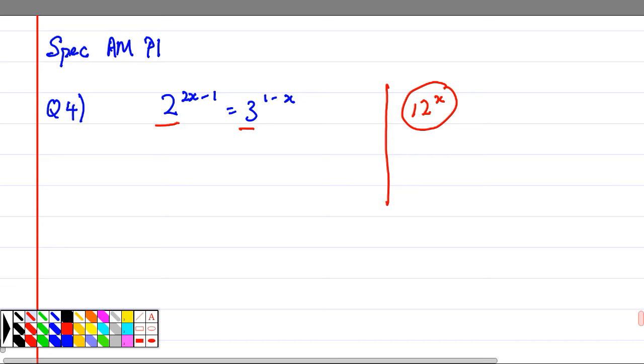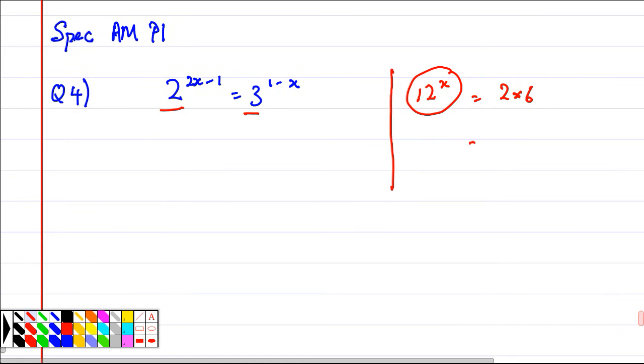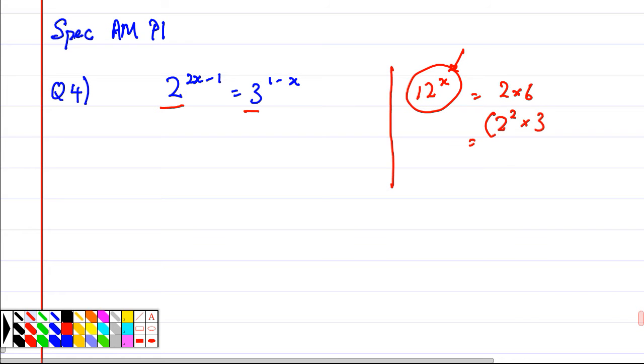Split it into what? 2 and 3, of course. So of course you can say this is 2 times 6, but you can say this is 2 squared times 3. And because there's an x here, there's an x here, that means over here there is an x, which means this is something like 2x times 3x.